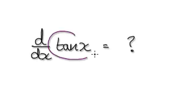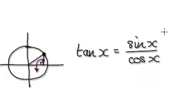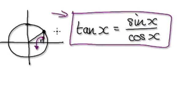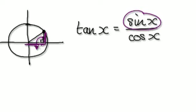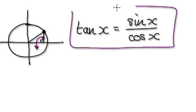We're going to try and work out the derivative of tan of x. Remember that tan of x equals sine of x over cos of x. I've asked you several times to memorize this — it has to be ingrained in your mind. If you ever forget, create yourself a circle of radius 1. This angle here is x. Remember, tan is opposite over adjacent, meaning that the height here is sine of x, and across here is cos of x. So tan of x is sine of x over cos of x. Try and memorize this.